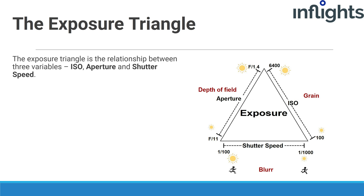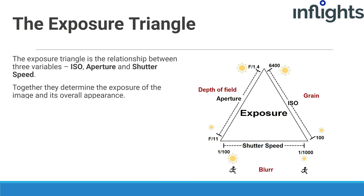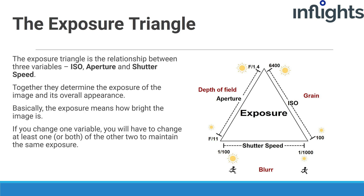One key concept is the exposure triangle — the relationship between three variables: ISO, aperture, and shutter speed. Together they determine the exposure of the image and its overall appearance. Basically, exposure means how bright the image is. If you change one variable, you will have to change one of the other two to maintain the same exposure.